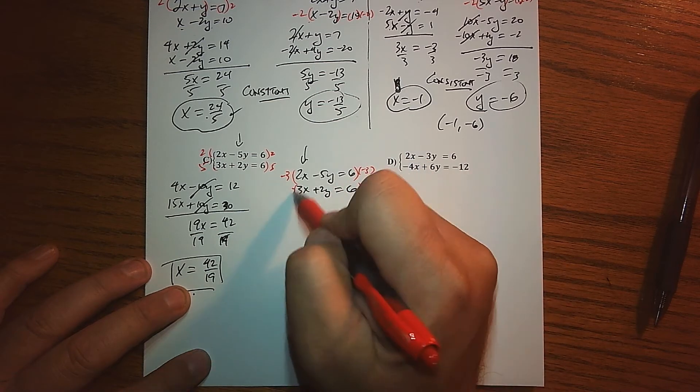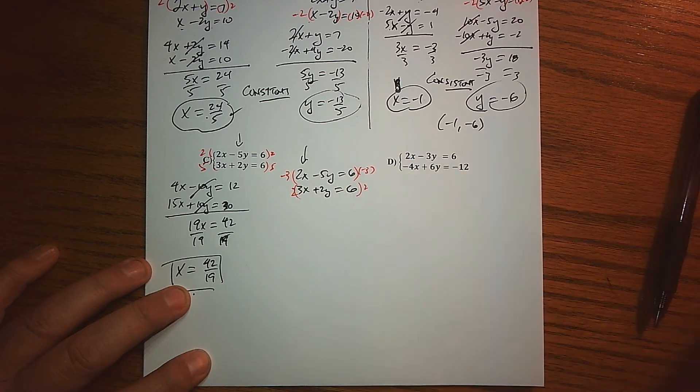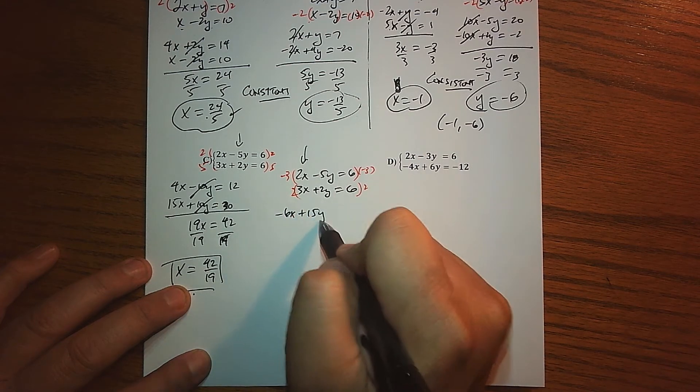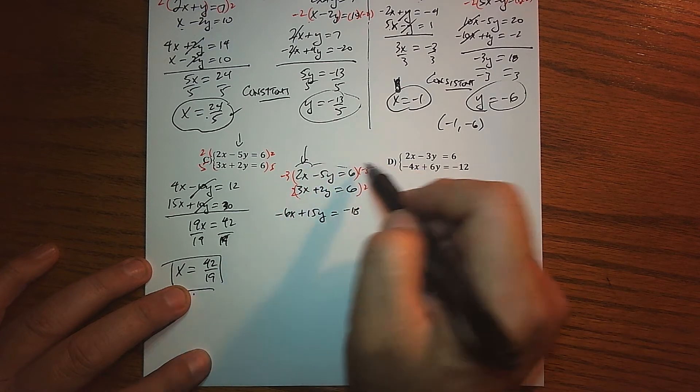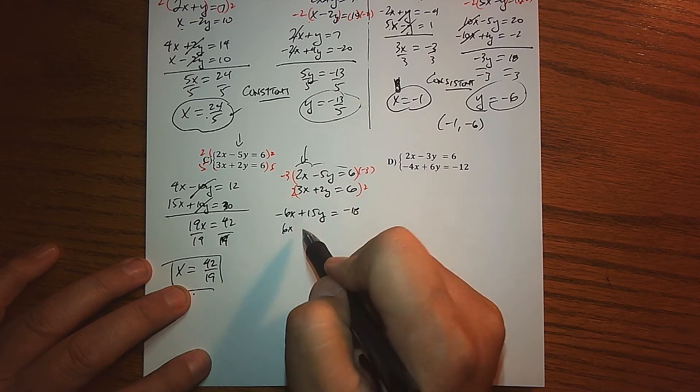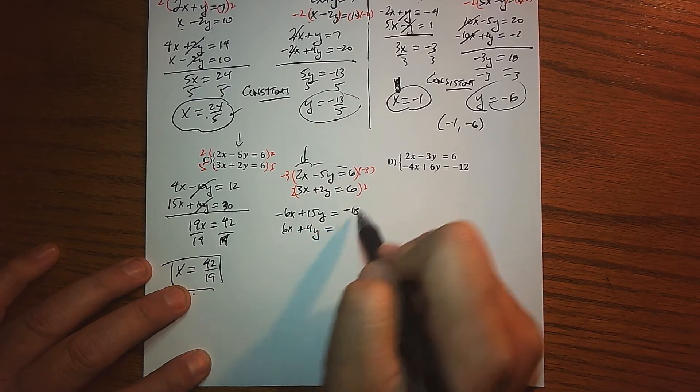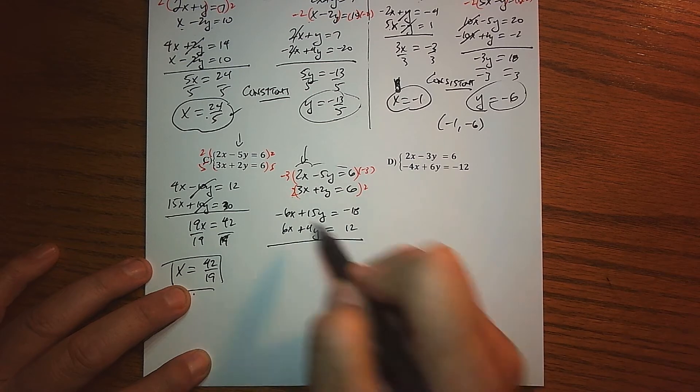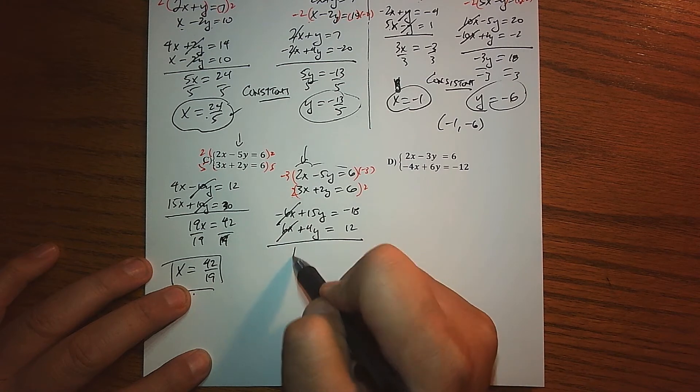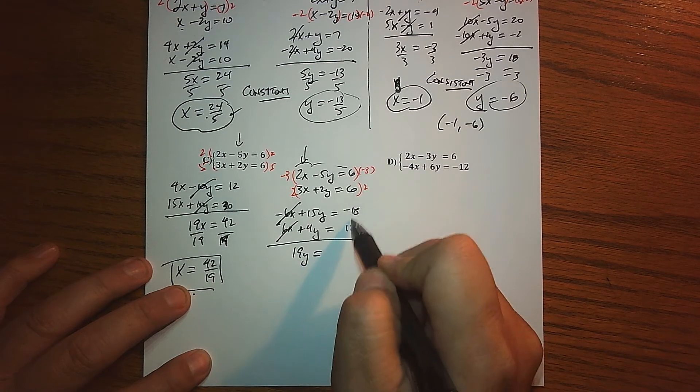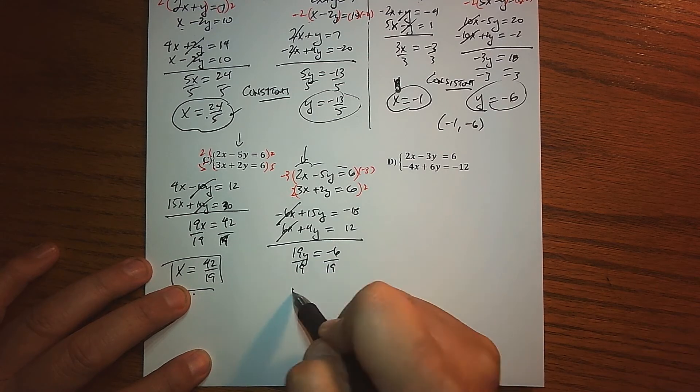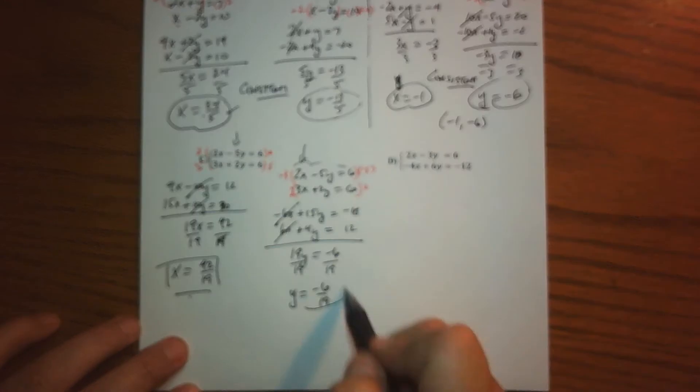How about we multiply the first one on both sides by negative 3, and we multiply the bottom by 2. That's going to create a new system: we get negative 6x plus 15y equals negative 18. For this one we get 6x plus 4y equals 12. By design, the x's cancel out. 15y and 4y is 19y, and negative 18 and 12 gives us negative 6.